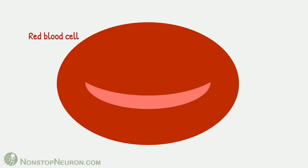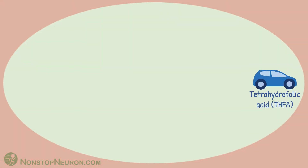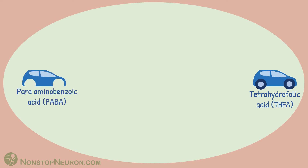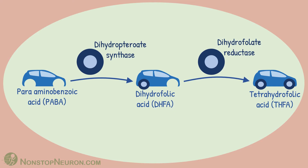This is our red blood cell, and this is an unwelcome malarial parasite growing in the cell. This is tetrahydrofolic acid, required for various metabolic activities in the parasite. It is synthesized from para-amino-benzoic acid. The enzyme dihydropteroate synthase produces dihydrofolic acid using PABA, and then the enzyme dihydrofolate reductase converts it into tetrahydrofolic acid. These steps are important for the survival of malarial parasites.